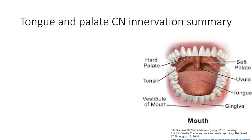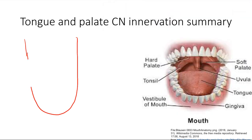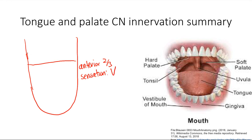Let's draw out the tongue. The anterior two-thirds: sensation comes from cranial nerve 5 — the trigeminal nerve — specifically the V3 mandibular division, since the tongue is in the mandibular area. Taste from the anterior two-thirds comes from cranial nerve 7, the facial nerve.